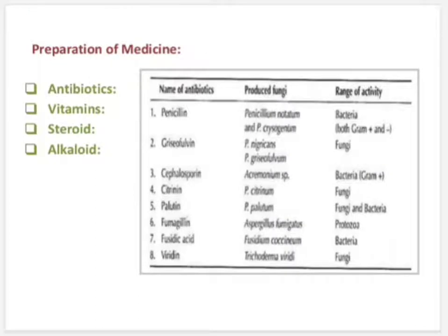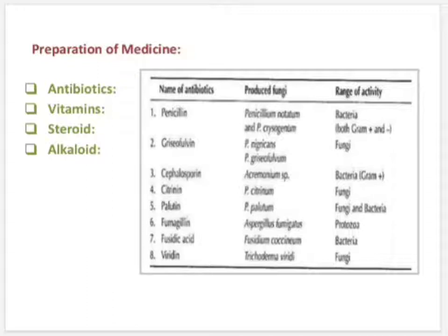Now, preparation of medicine. Fungi have both positive and negative roles in our daily life, so they are our friends as well as enemies. Different types of fungi are used in the production of important numbers of drugs. The most important species are Penicillium notatum, Claviceps purpurea, Saccharomyces cerevisiae, Aspergillus, and Tolypocladium. Use of fungi as antibiotics.